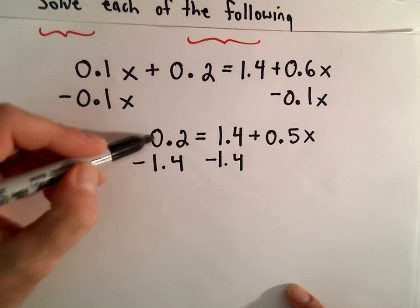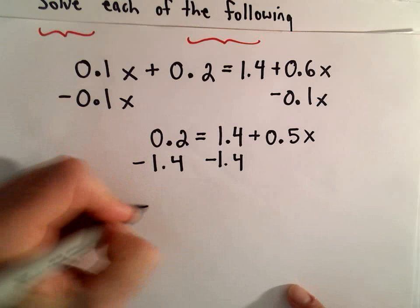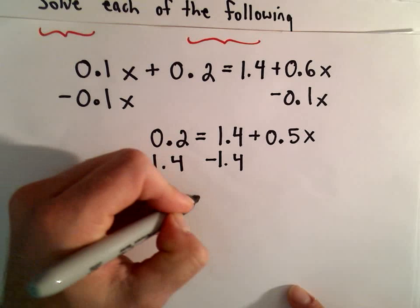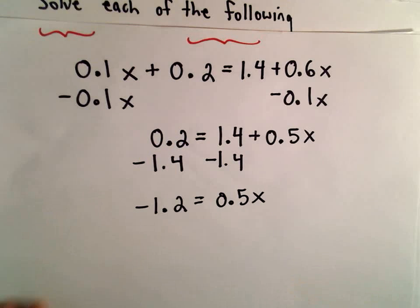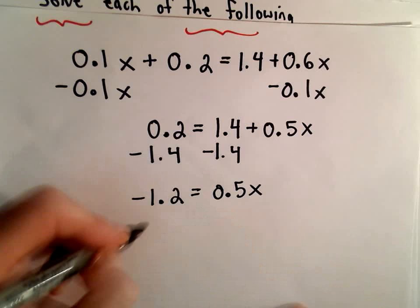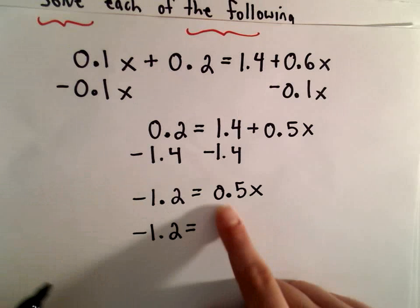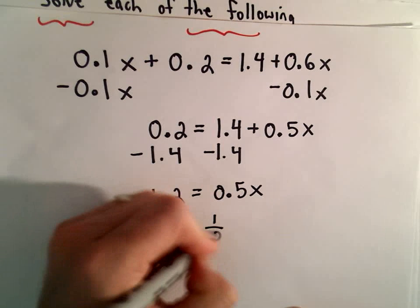Okay, 0.2 minus 1.4 will be negative 1.2 equals 0.5x. Well, I'm even going to use fractions here. 0.5 is the same thing as one half.